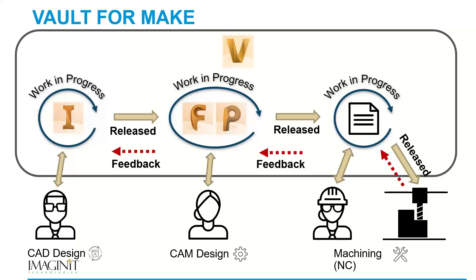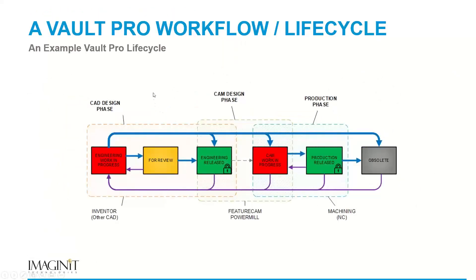In a typical lifecycle, you have a CAD design phase and a production phase. Previously, FeatureCam and PowerMill weren't linked with engineering — engineering would send the file and it was a black box, with no control over programming revisions. Now you create a CAM design phase where revisions are tracked before going to production, and you can create a revision loop for the actual NC code. This ensures you connect all design phases from CAD to CAM to production and create the feedback loop that's so desperately needed.